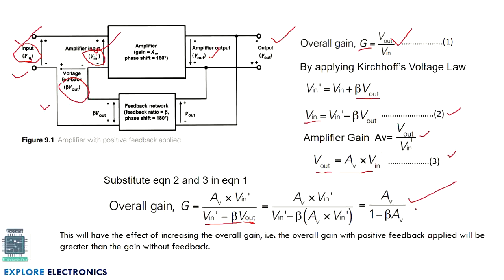The effect of positive feedback is to increase the overall gain. The overall gain becomes Av divided by (1 minus β·Av). Since the denominator is less than the numerator after feedback is applied, the overall gain is increased when positive feedback is used.